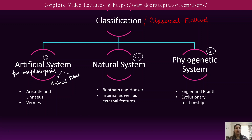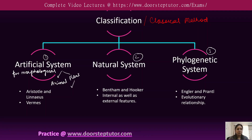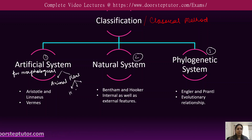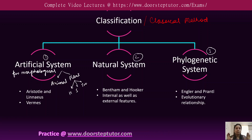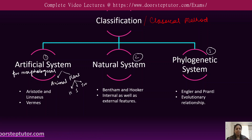In that two-kingdom classification of animal and plant, plants were further divided into three categories: herb, shrub, and tree. On the basis of height — if the plant is smaller in size it is an herb, somewhat bigger is a shrub, and tall plants are trees. So classification was based on morphological features like height.